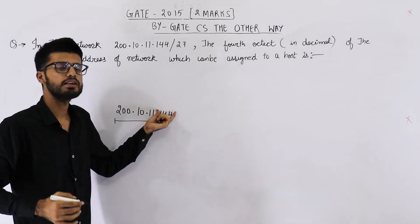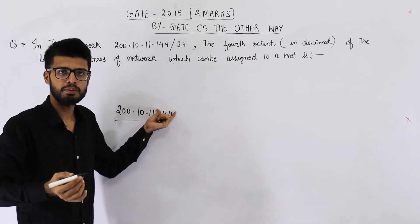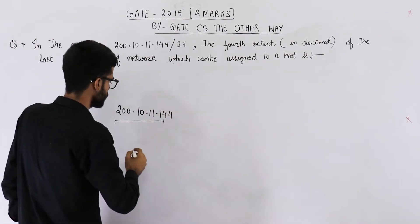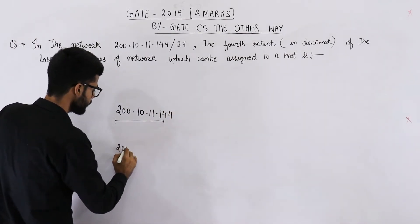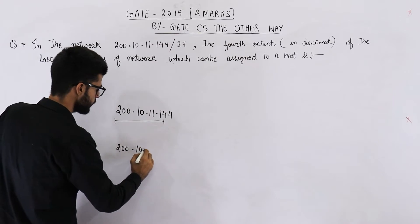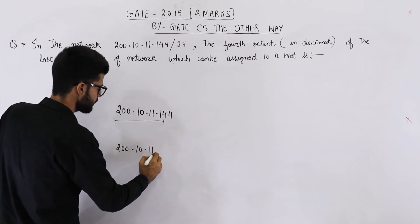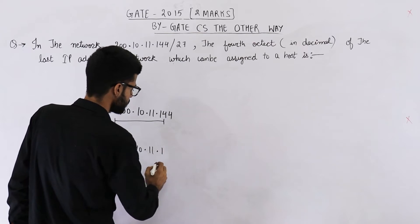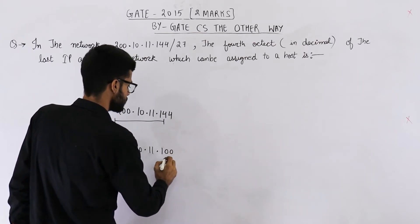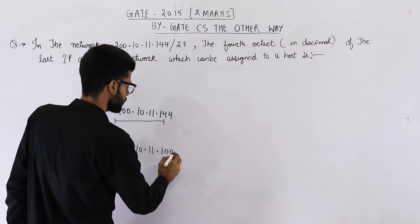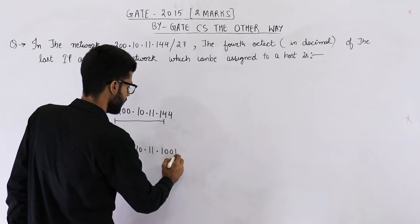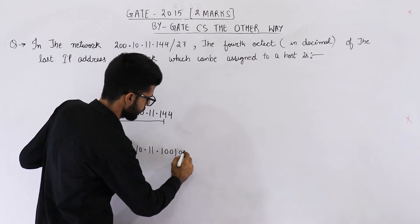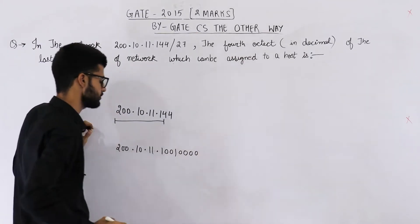So that means just take the 3 bits from 144. Let us convert 144 into binary. 200.10.11.144 — 144 is 128 plus 16. So 64 is 0, 32 is 0, and 16 is 1. 2 to the power 4 is 1 and the rest of the bits are 0. So 144 in binary is 10010000.